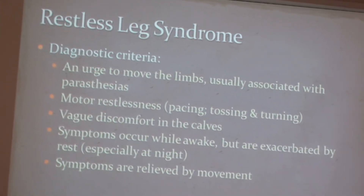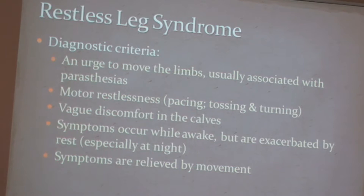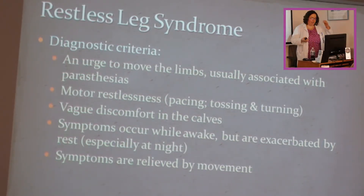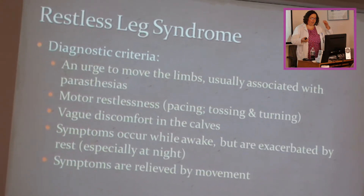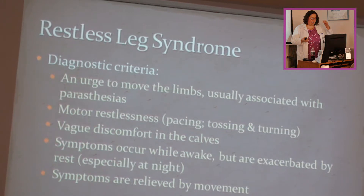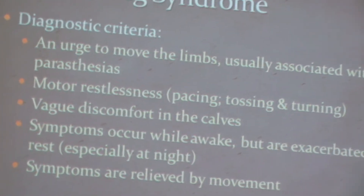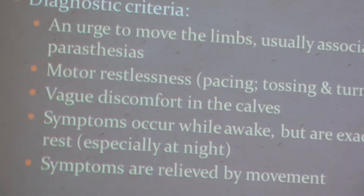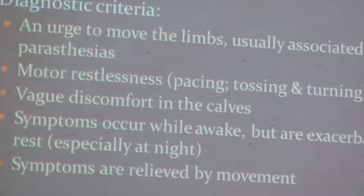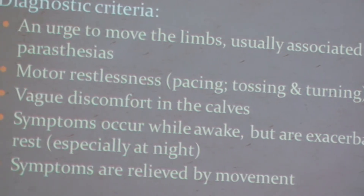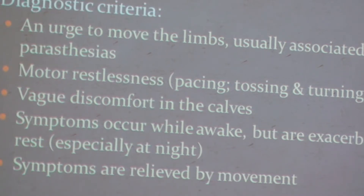Restless leg syndrome: to qualify for this diagnosis, one must have a pretty constant urge to move their limbs, often with paresthesias — numbness, tingling, pins and needles — and motor restlessness such as pacing, tossing, turning, or rubbing legs together. It's typically described as a vague discomfort in the legs, especially the calves. Symptoms occur when awake but typically flare up at night, and are usually relieved by movement — but if you're up all night, that's not good sleep either.